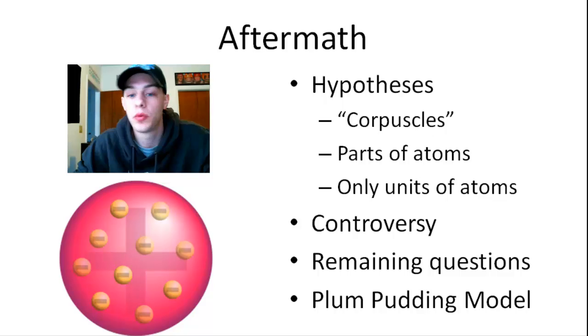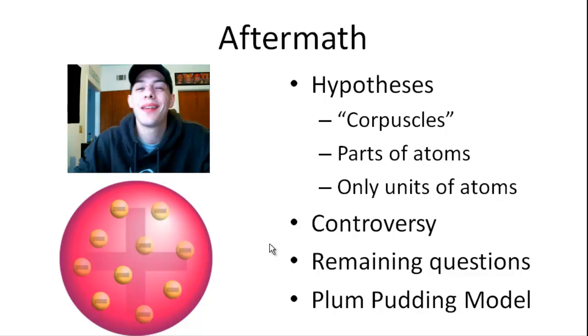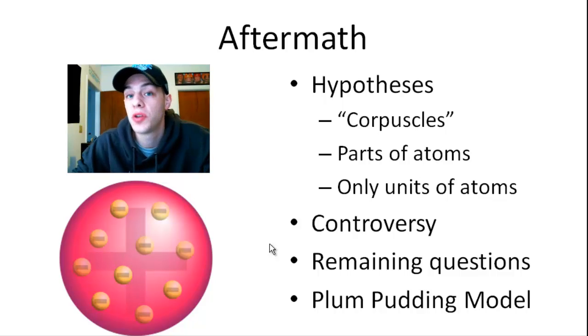But of course these hypotheses were met with criticism. There was a lot of controversy associated with them. The first two were fairly largely correct, at least by today's standards, but the third one obviously we know that to be untrue. And there were some remaining questions just lingering around. I mean, now that we know that electrons exist and we know that atoms are electrically neutral, well how does—where does the positive charge come from? How does the positive charge fit into all of this? There must be some positive charge canceling out that negative charge that we have in electrons. So how does that fit in?